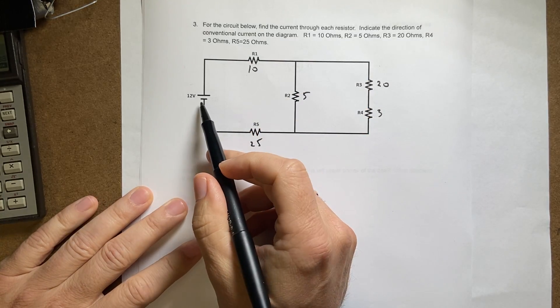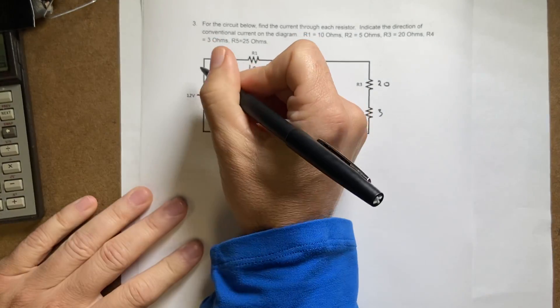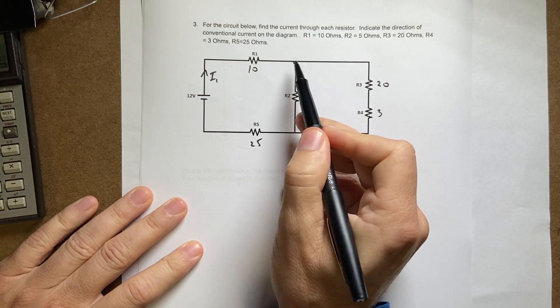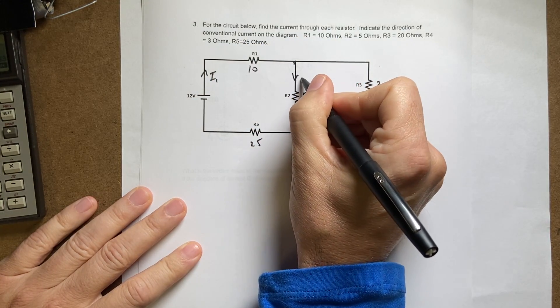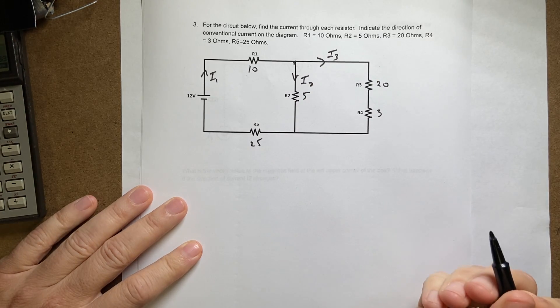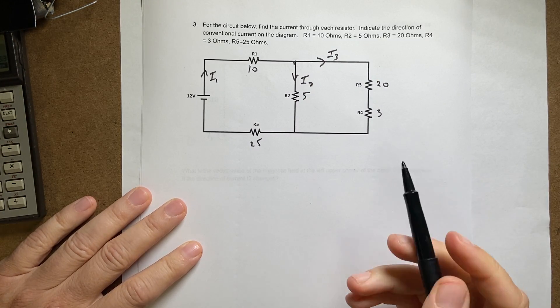I'm going to pick this as i1. It comes down here at this point, there's a junction, so some of it's going to go this way as i2, and some of it will go that way as i3. I'm picking the directions right now; they could be wrong.